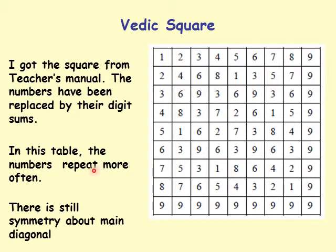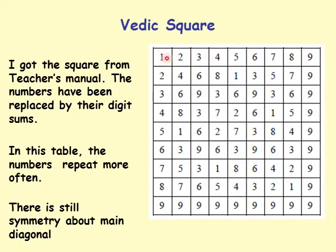In the Vedic square, numbers repeat more often. For example, 1 appears in multiple places — it only appeared once in that column in the multiplication table. We still have symmetry about the main diagonal: 9 here and 9 there, 2 and 2, 6 and 6, 3 and 3, and so on.